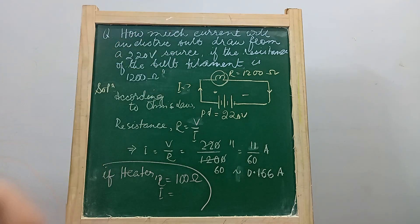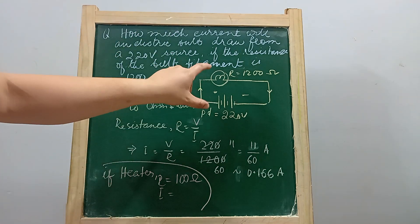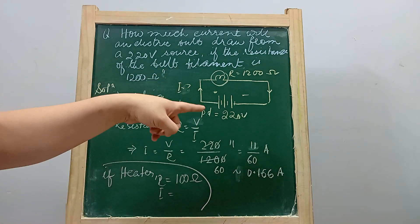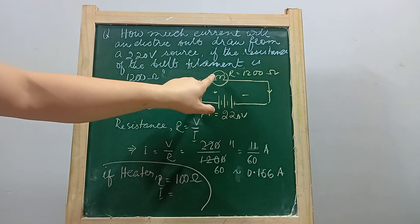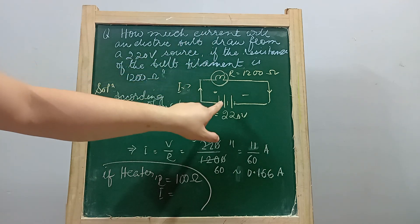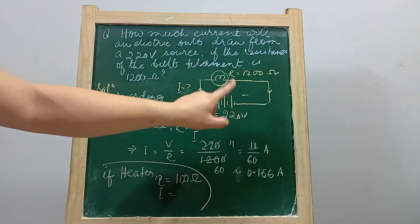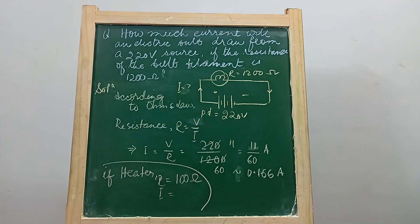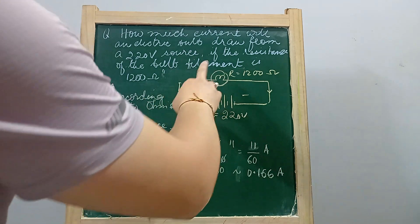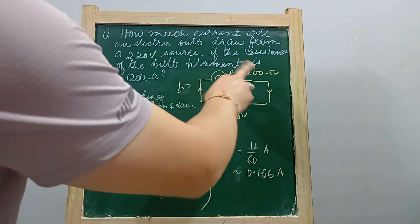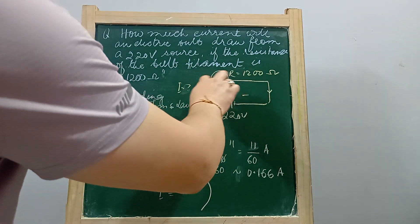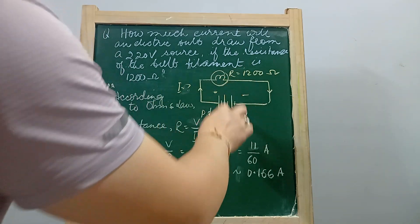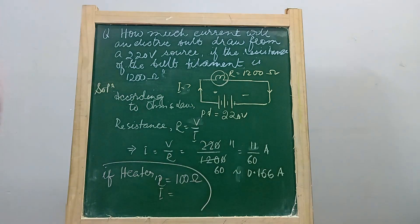To understand the question, I've drawn a circuit with the usual symbols. Let this be the electric bulb, and a source of potential difference is maintained using a battery or any other source. The potential difference maintained is 220 volts across the bulb, connected through wires — the two ends of the bulb connected to the positive and negative terminals of the battery.